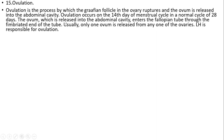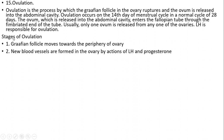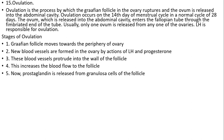Ovulation: ovulation is the process by which the Graafian follicle in the ovary ruptures and the ovum is released into the abdominal cavity. Ovulation occurs on the 14th day of the menstrual cycle in a normal cycle of 28 days. The ovum is released into the abdominal cavity and enters the fallopian tube through the fimbriated end. Usually only one ovum is released at one ovulation. Stages of ovulation: the Graafian follicle moves to the periphery of the ovary; new blood vessels are formed in the ovary by the action of LH. These blood vessels protrude into the wall of the follicle, increasing blood flow. Prostaglandin is released from granulosa cells of the follicle, causing leakage of plasma into the follicle.